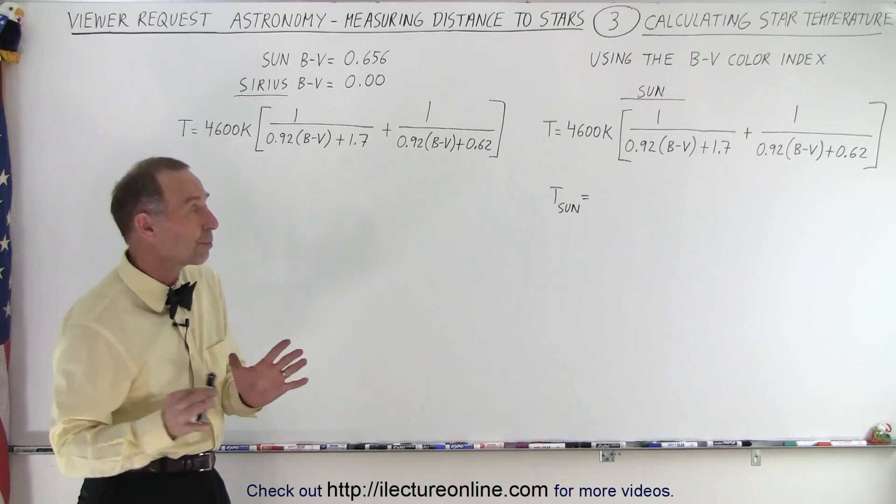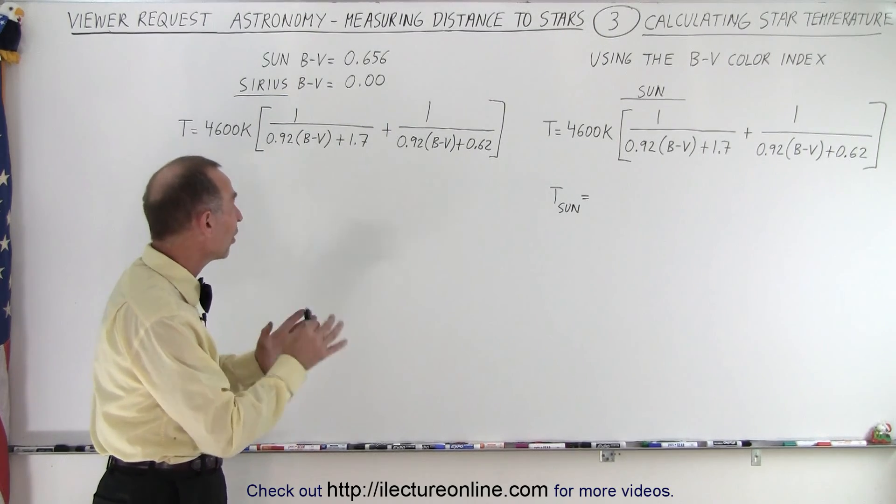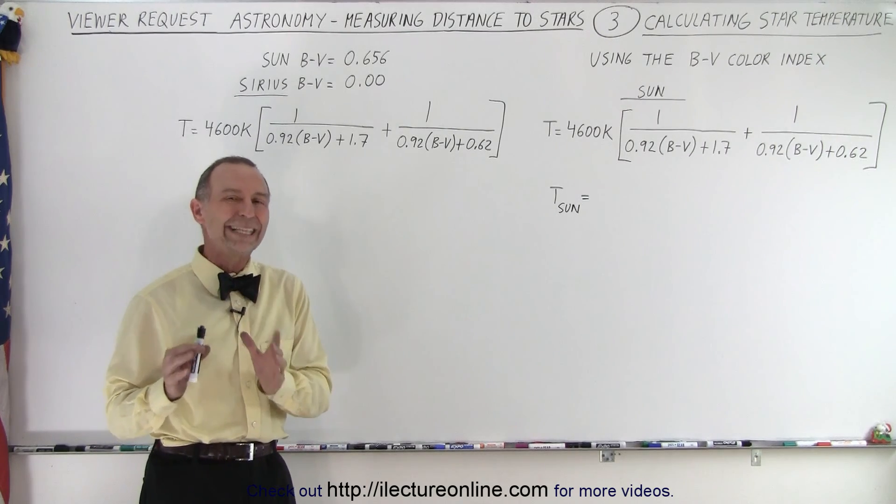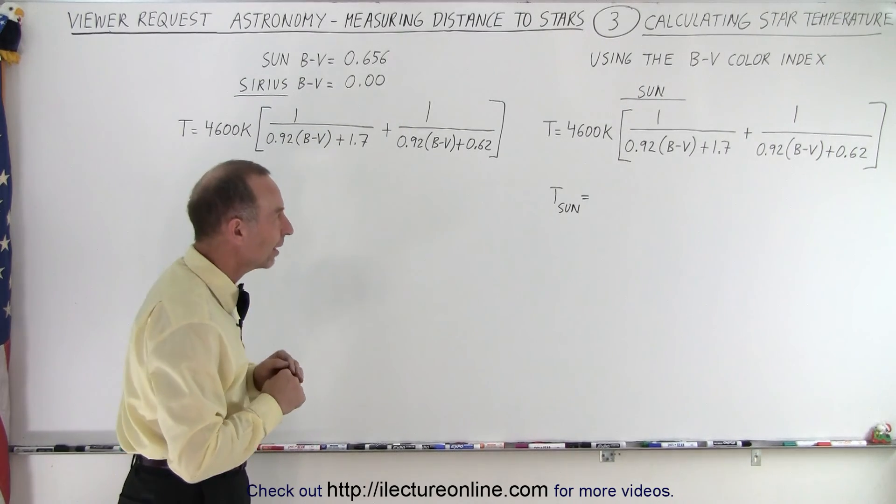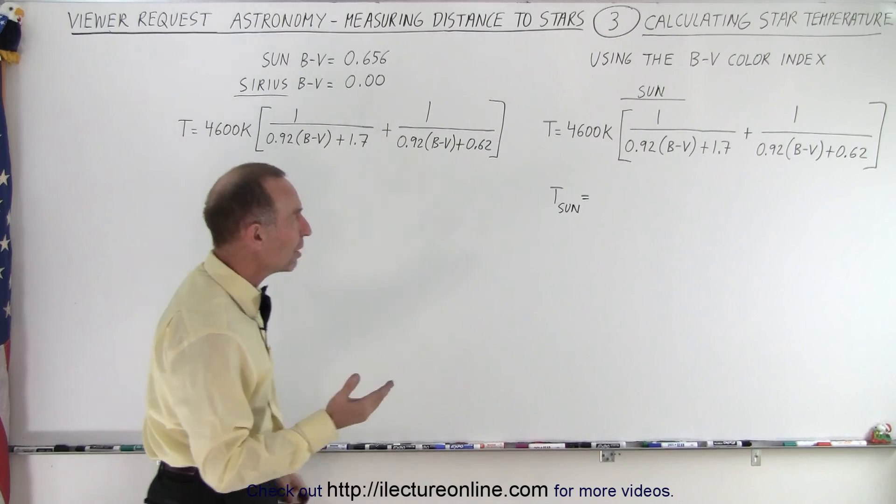So let's calculate the surface temperature for the Sun and the surface temperature for Sirius using this B minus V color index technique. So the equation reads as follows.